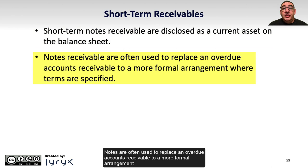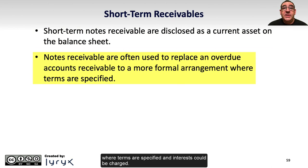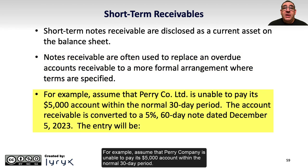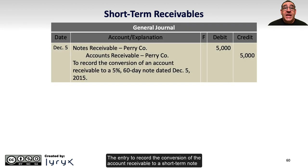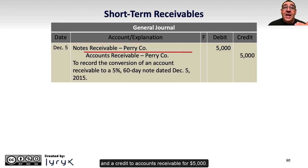Notes are often used to replace an overdue accounts receivable with a more formal arrangement where terms are specified and interest can be charged. For example, assume that Perry Company is unable to pay its $5,000 account within the normal 30-day period. The accounts receivable is converted to a 5%, 60-day note dated December 5, 2023. The entry to record this conversion includes a debit to notes receivable for $5,000 and a credit to accounts receivable for $5,000.